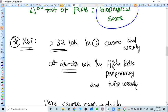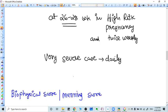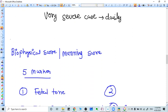NST normally we do when there is pregnancy more than 32 weeks. We do it weekly. But if there is a high risk pregnancy, we do it twice weekly and we start earlier, like at 28 weeks also. Very severe pregnancy, for example very severe preeclampsia, what we do? We do NST daily. Okay, thank you.